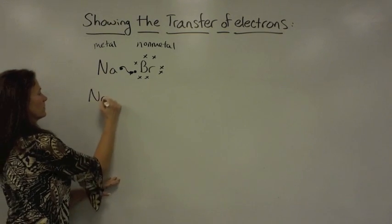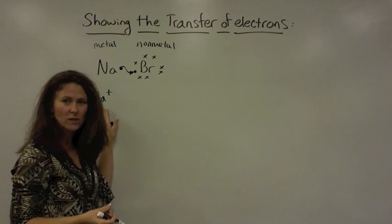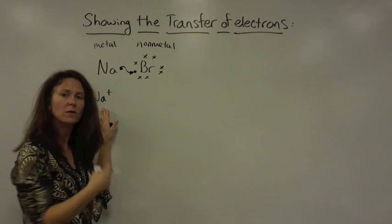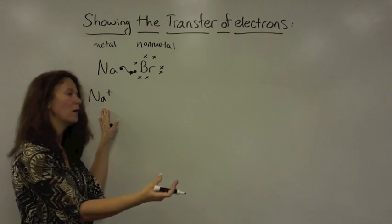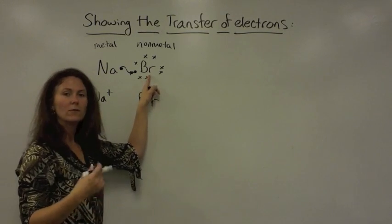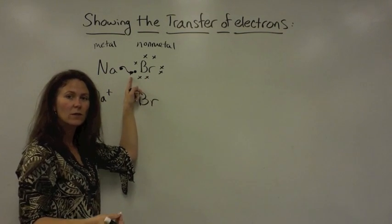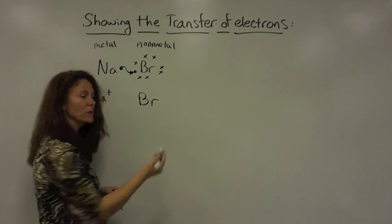Sodium now has formed a positively charged ion because it is no longer neutral due to the lack of that one electron it just lost. Bromine originally was neutral, but after gaining an electron has now achieved a minus one charge.